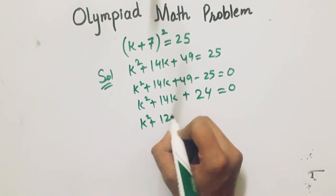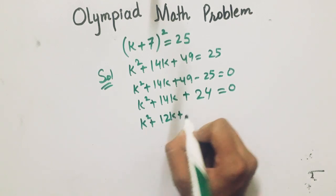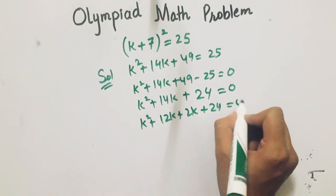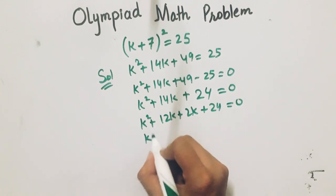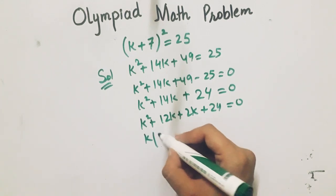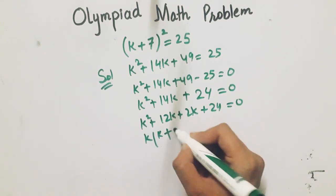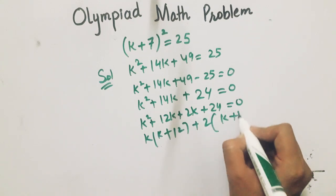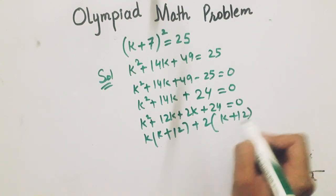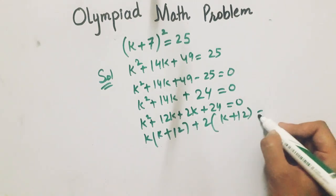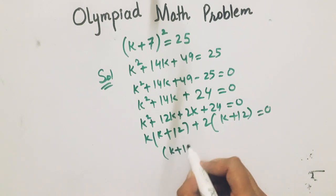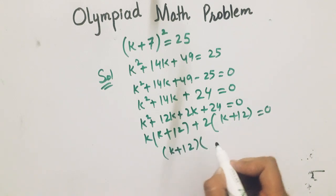So x squared plus 12x plus 2x plus 24 equals 0. x is taken as common, so remaining is x plus 12. And 2 is common, so x plus 12. We have the answer as x plus 12 and x plus 2.